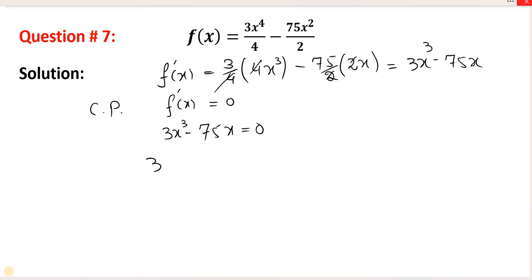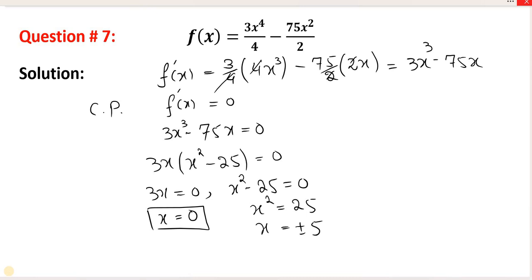If we take 3x common, then we have x squared minus 25. This means that 3x is equal to 0, or x squared minus 25 is equal to 0. If we solve these, then we have x is equal to 0. And if we add 25 to both sides, then we have x squared is equal to 25, and the square root gives us plus or minus 5.